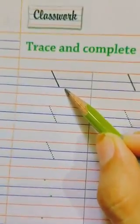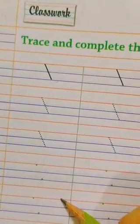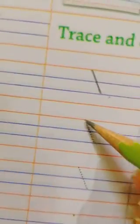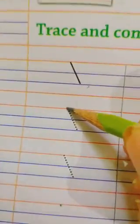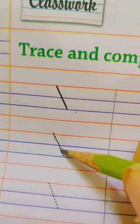Okay. Now first we will trace. After that we will draw the slanting line. Keep your pencil on this first dot and join all the dots very slowly slowly. Like this.